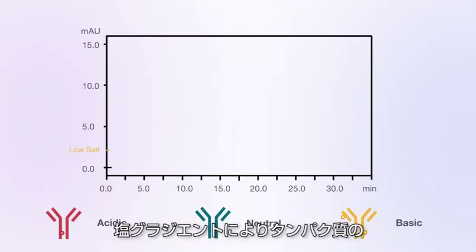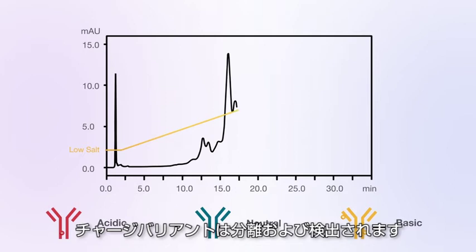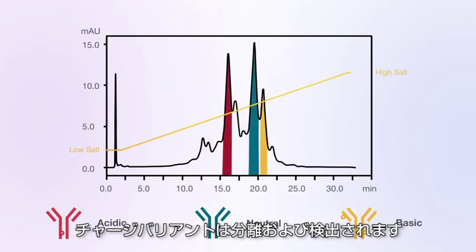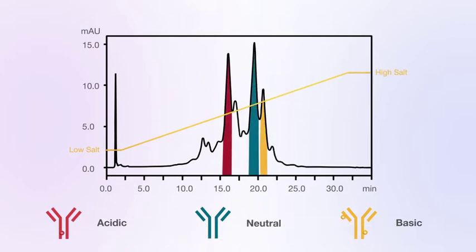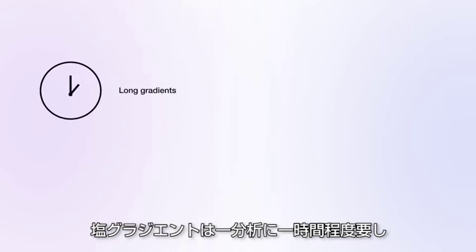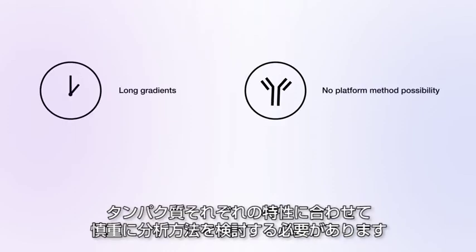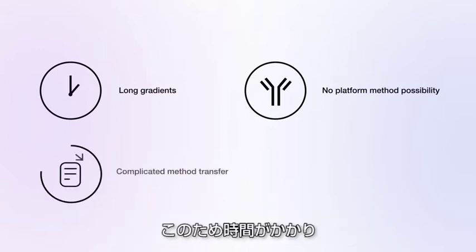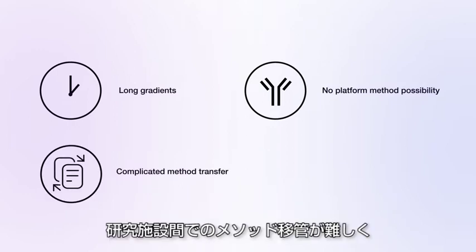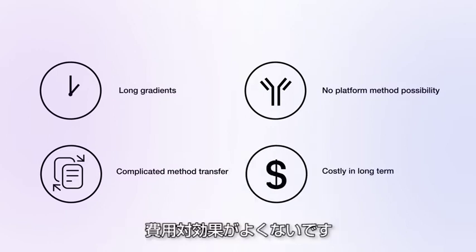Over a lengthy salt gradient, the protein charge variants are separated and detected. Salt gradients can be as long as an hour and must be carefully optimized for each and every drug candidate. This is both time-consuming and challenging when transferring methods, ultimately costing more as candidates progress through drug development.